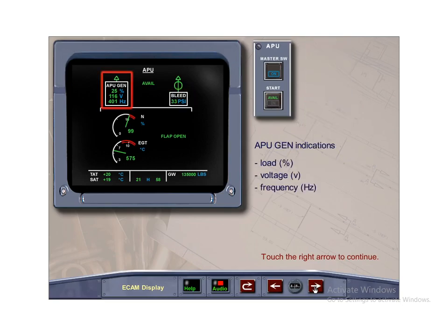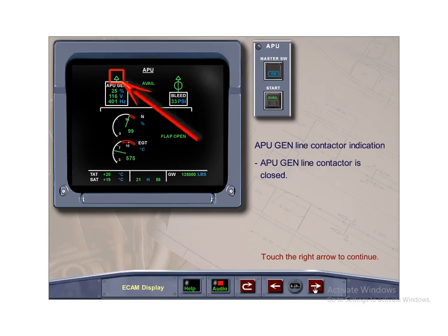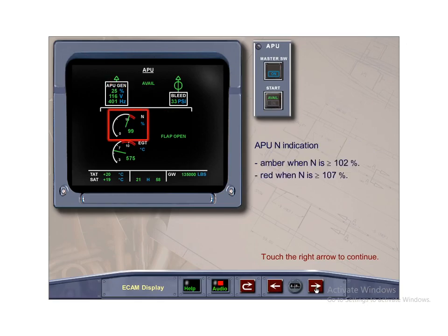The white box in the upper left corner displays the APU generator load, voltage, and frequency. They are identical to the APU generator parameters on the ECAM electrical page and are further explained in the electrical module. The small arrow above the APU generator indication box is displayed when the APU generator line is closed. The APU rotational speed is displayed in green when indications are normal. The analog and digital indicators become amber when APU speed reaches 102% and red when APU speed reaches 107%, at which point automatic shutdown begins.